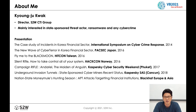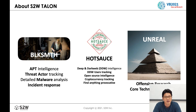Let me tell you about our CTI group briefly. We call our group Talon. It is comprised of three teams: Blacksmiths, Hustos, and Unreal. Blacksmiths focuses on APT intelligence, threat actor tracking, and detailed malware analysis. Hustos focuses on deep dark web monitoring and cryptocurrency tracking using our solution and many OSINT tools. Unreal's goal is making impossible things possible through core technology research.